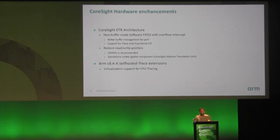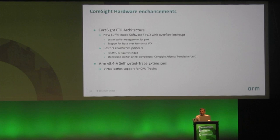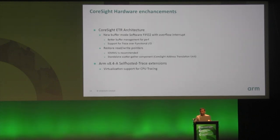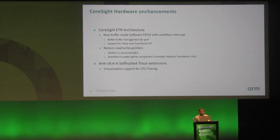On the ETM side, there are ARM architecture v8.4 extensions that mandate implementing features supporting virtualization of CPU tracing. This includes hypervisor or EL3-level firmware controlling what are the prohibited regions that an ETM can trace — the hypervisor can say you cannot trace the hypervisor or EL2 level by setting a register indicating that region is prohibited. The timestamp source has also been changed to the architecture timer, with provisions to control what time a guest sees in the time source.